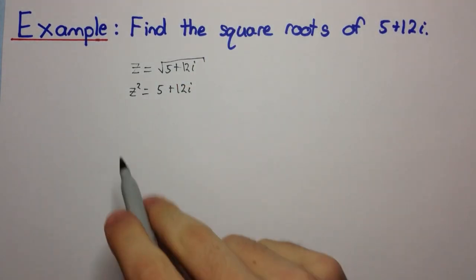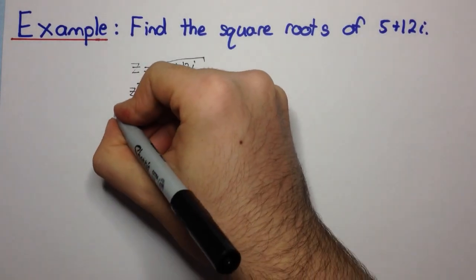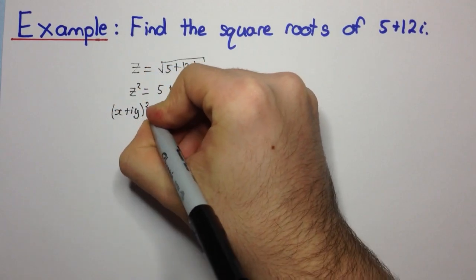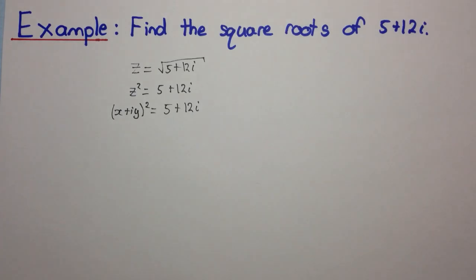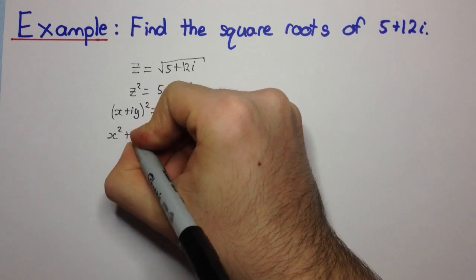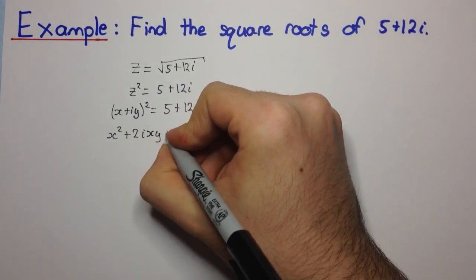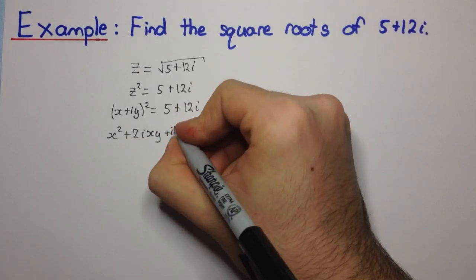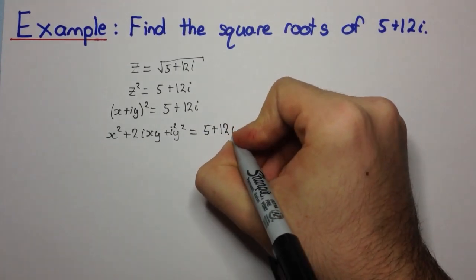Now if we let z equal to x plus iy, then here we can get x plus iy all squared equals 5 plus 12i. Now let's expand this out. So we're going to get x squared plus 2i xy plus y squared i squared equals 5 plus 12i.